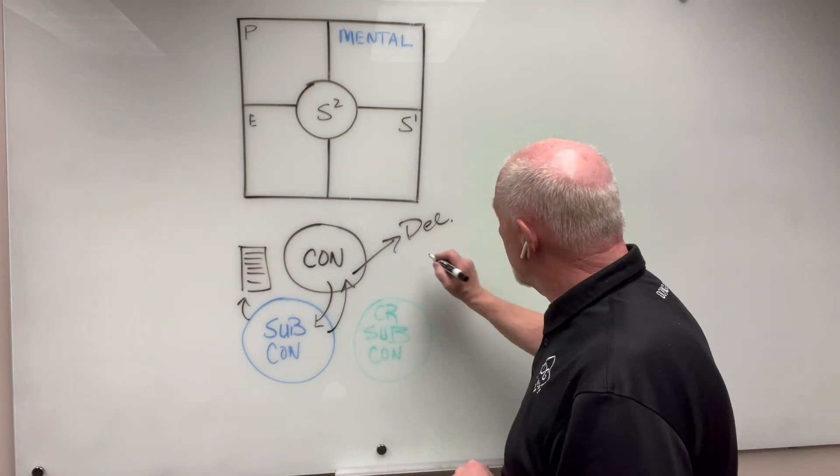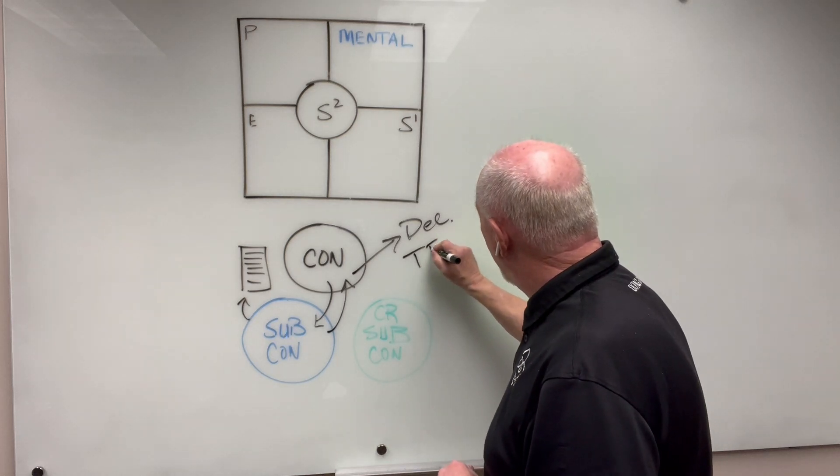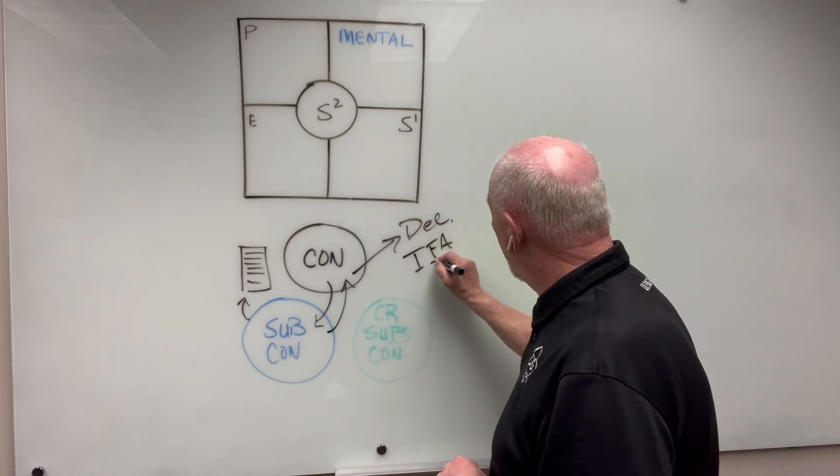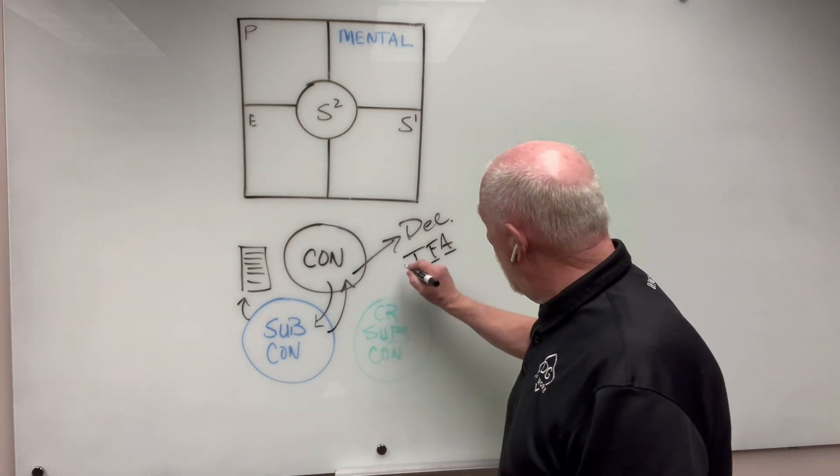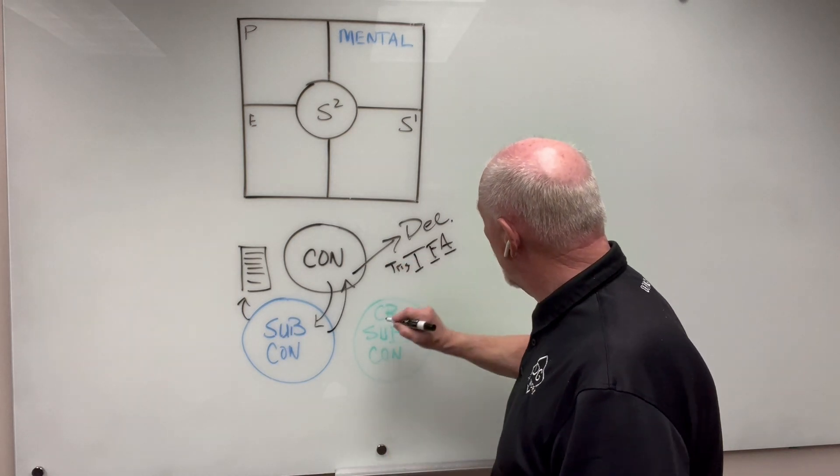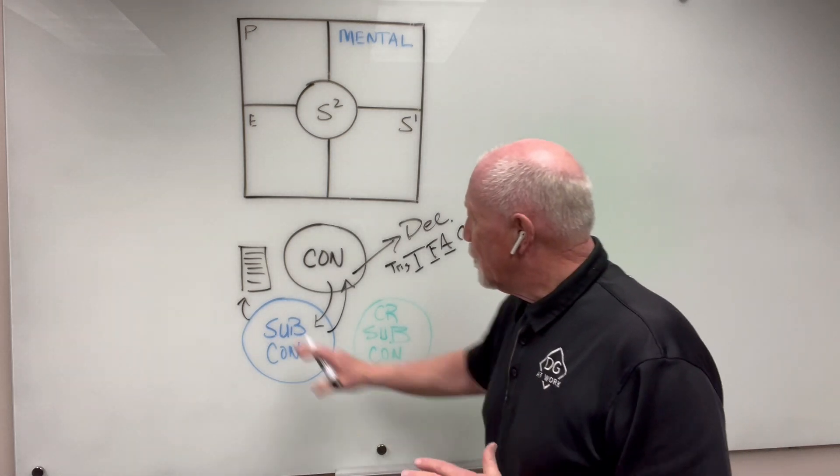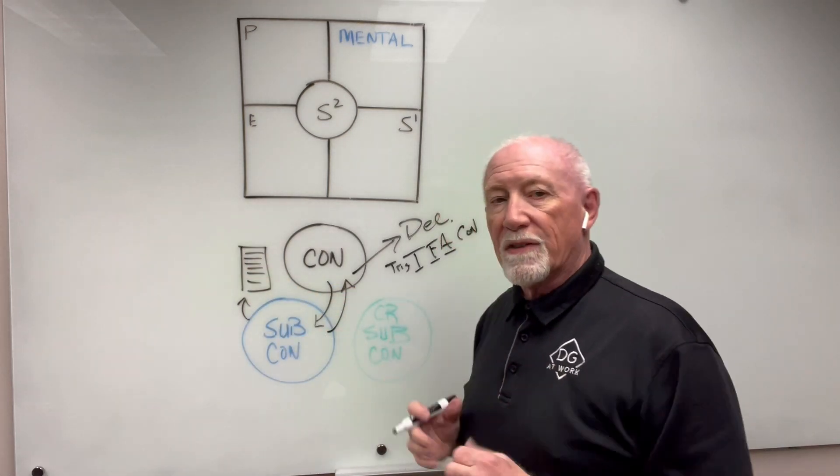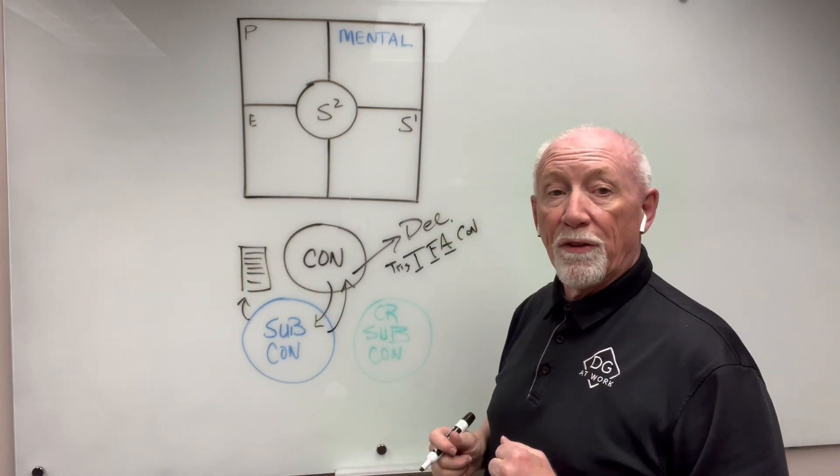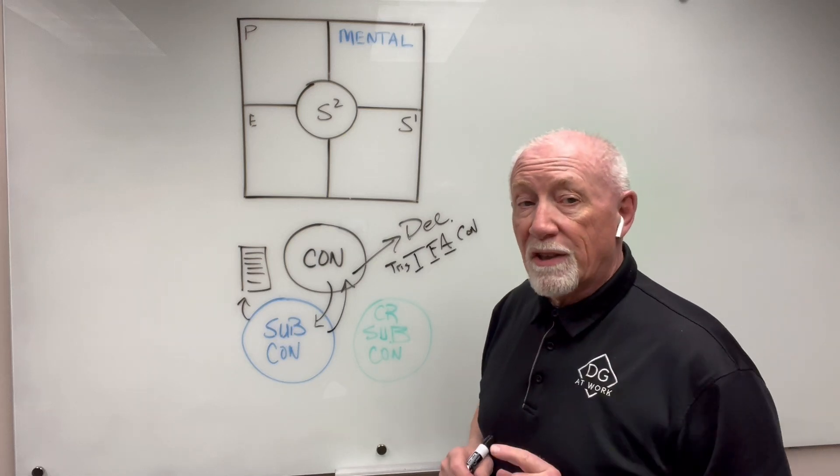Last time we talked about the TFA process. You think, you feel, you act. There's always a trigger. There's always a trigger. There's always a consequence. Now look, the triggers are what happens on the outside world. You need to understand what the triggers are. But you need to understand this too.